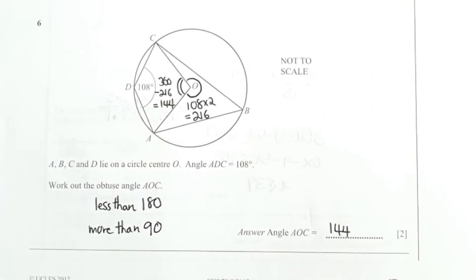For question 6, the first thing that I identified was the major sector of COA which is 216, reason being angle from the center is twice the value of angle at the circumference. Then I worked out the obtuse angle of AOC, which means it is the minor sector they are referring to. So I took 360 minus 216, you get 144. Key thing to note: obtuse angles means less than 180 but more than 90.